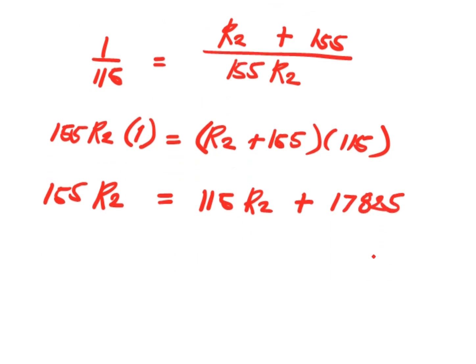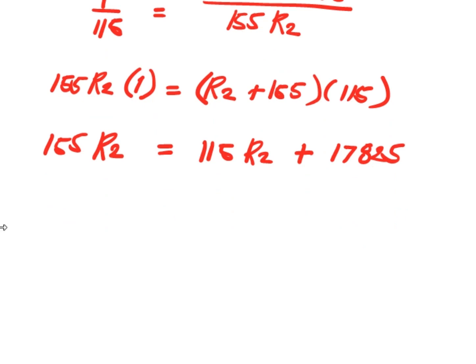Now we solve for R2. 155 R2 minus 115 R2 equals 17,825. 155 minus 115 is 40 R2.